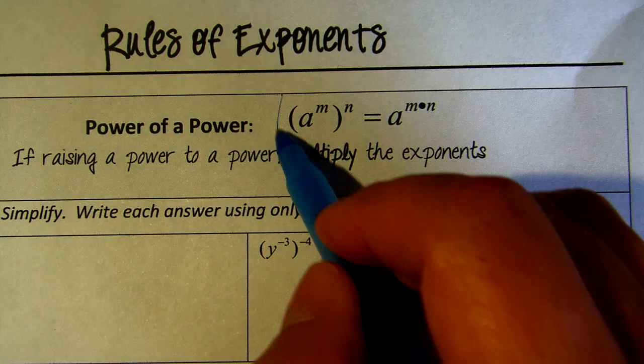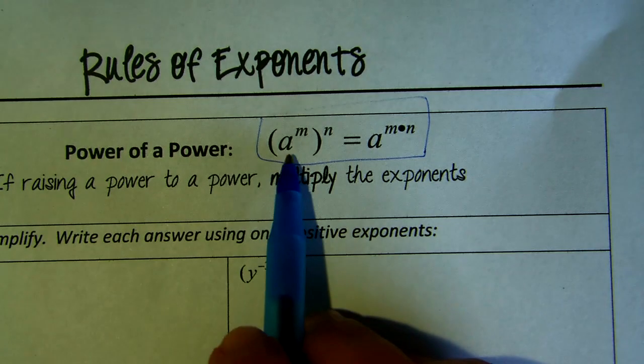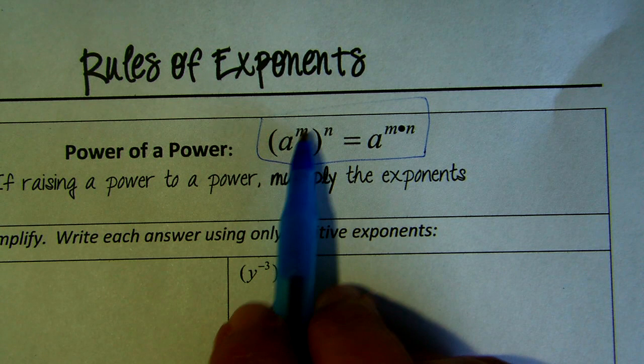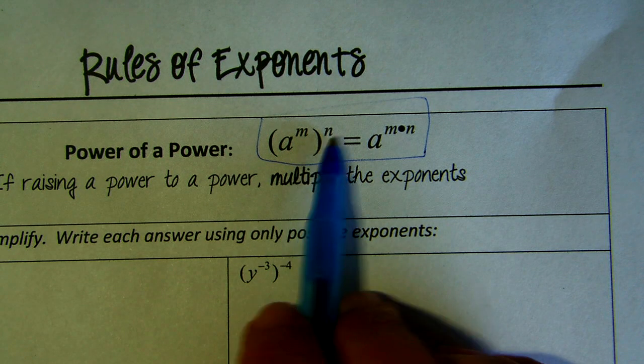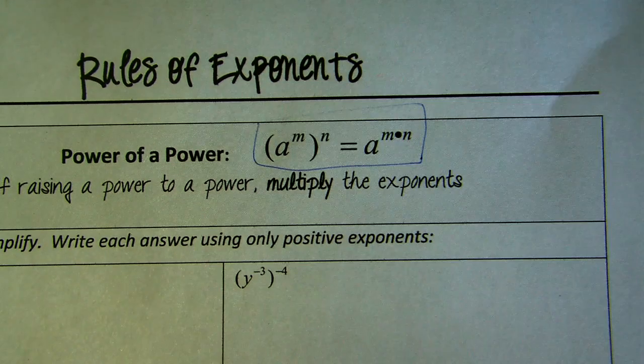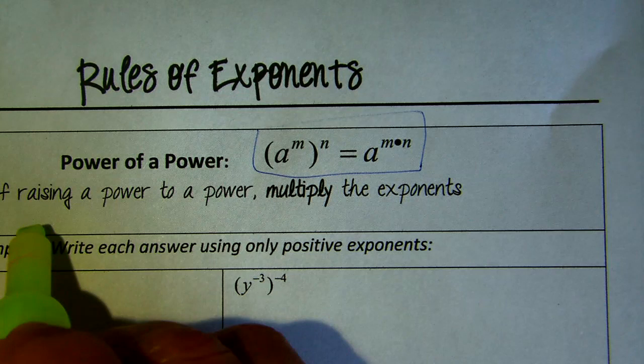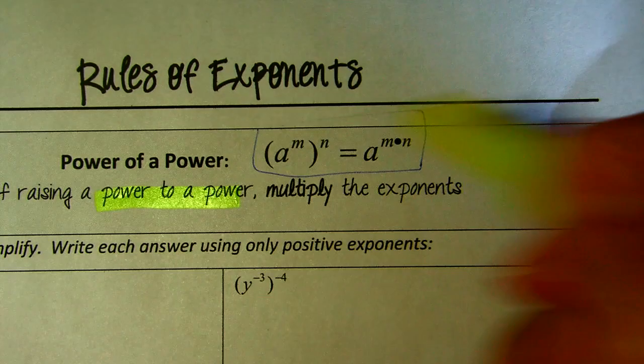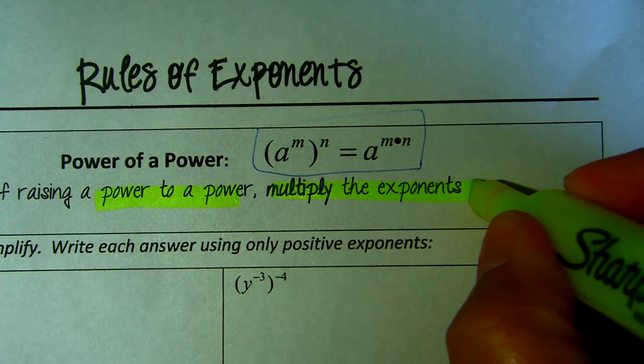This is the formula, a power to a power. If you have a number with a power and then everything to a power, what do we do with the powers? Powers, power to a power, you multiply the exponents.